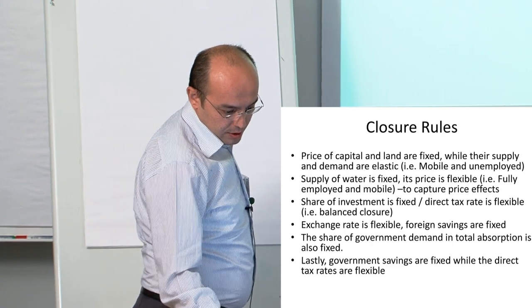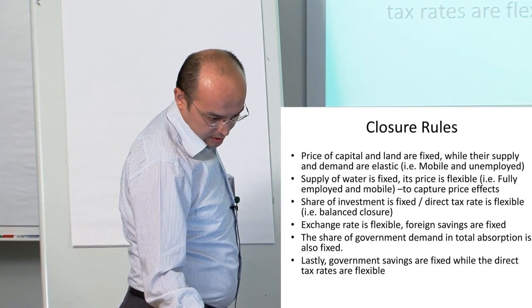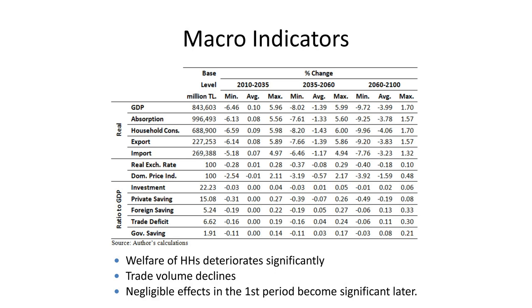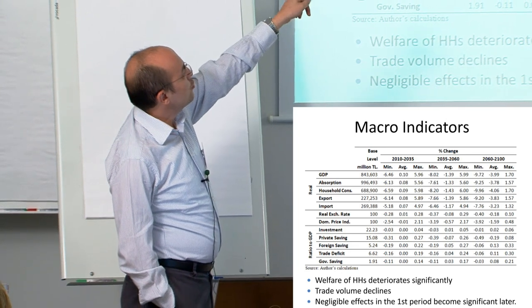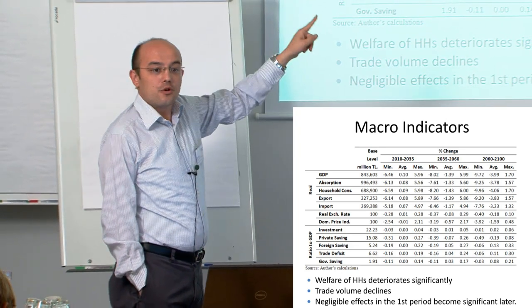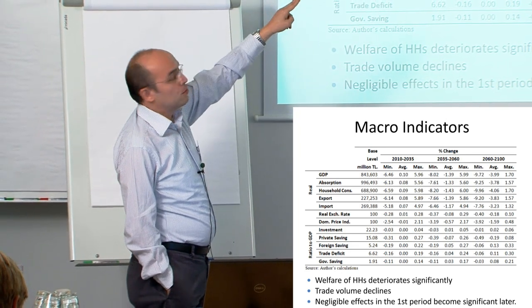The closure rules are pretty standard. These are the macro indicators. I run the scenario for each year—100 scenario results. But instead of showing all of them, I'm giving you minimum, maximum, and average between 2010 and 2035.